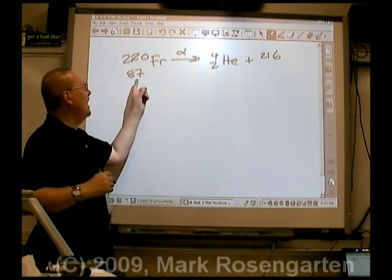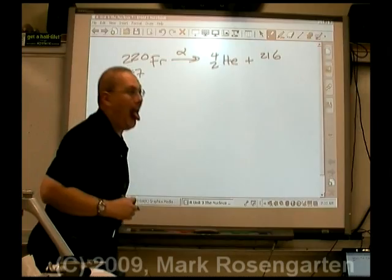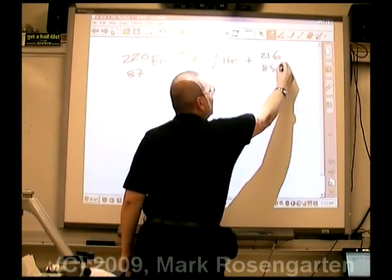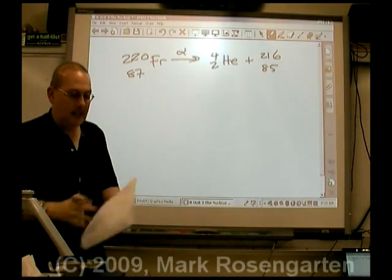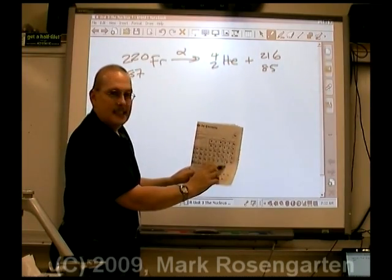Down here, we have 87 protons in the nucleus. We're going to lose two of them when it gets barfed out. 87 equals 2 plus 85. And according to the periodic table, element 85 is astatine, At.